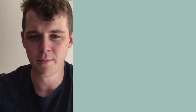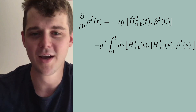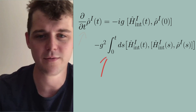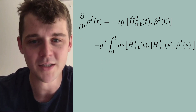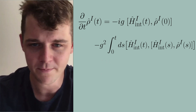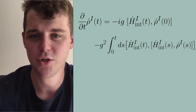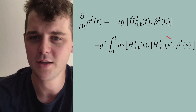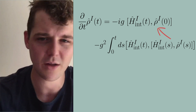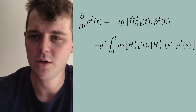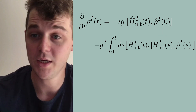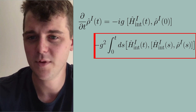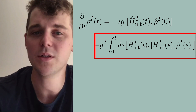The integro-differential form means that on the left-hand side we've got a time derivative and on the right-hand side we've got an integral — these types of equations are called integro-differential equations in general. The structure is: we've got a commutator with the initial state as the first term, which is actually the less important term, and then the second term is a double commutator which integrates over this history from zero to t.